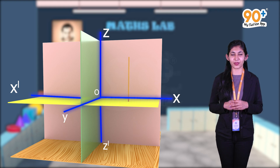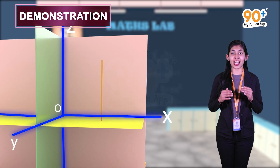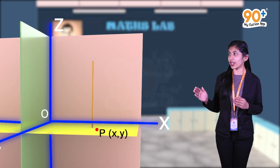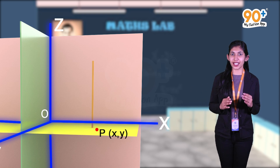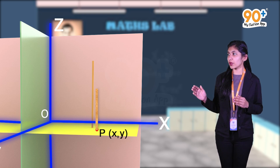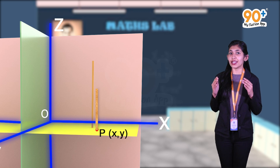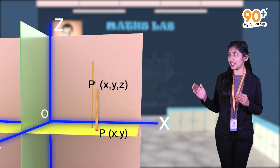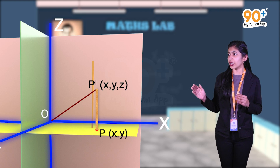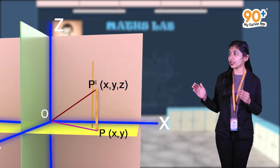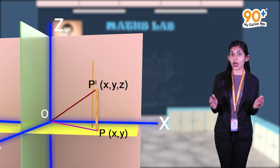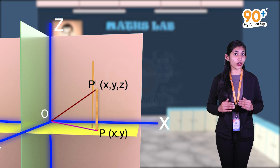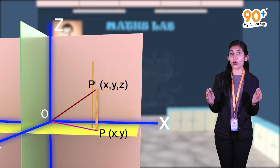Now let's see the demonstration. Let's mark the point P of (x, y) on the xy-plane. Then fix a rod perpendicular to the xy-plane and parallel to the z-axis. Let's mark the upper tip of the rod as P-dash of (x, y, z). Then take a wire and join the origin and the upper tip of the rod. The distance of point P from the origin O is the length OP. The coordinates of the origin O are (0, 0) and the coordinates of point P are (x, y).